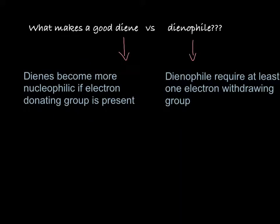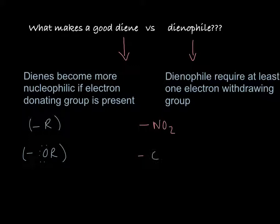So what makes a good diene and what makes a good dienophile? A diene is already sufficiently electron-rich to react, so it doesn't necessarily need a donating group, but if there is one it will make it more nucleophilic, which is a good thing. Some examples of electron-donating groups are R groups — any alkanes — and OR groups, known as alkoxy groups. The electron pairs help donate electrons, making it a better nucleophile. In contrast, dienophiles require at least one electron-withdrawing group in order to be reactive. Some examples of electron-withdrawing groups are NO₂, carbonyl groups (C double-bonded to O), nitriles (carbon triple-bonded to N), and esters.